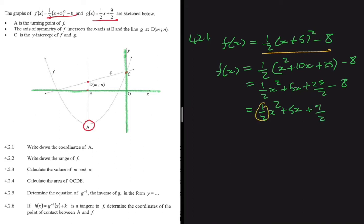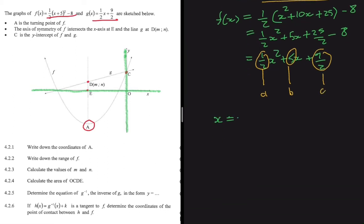The coefficient of x² is a, the coefficient of x is b, and the constant is c. The x-coordinate of the turning point is given by -b/(2a). So that's -5 divided by (2 × ½) = -5/1. Therefore x = -5.